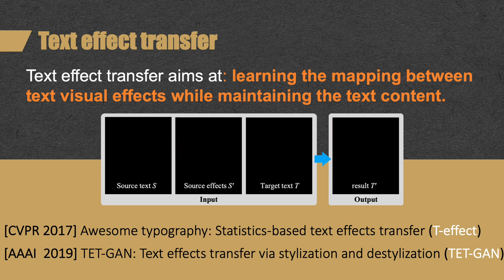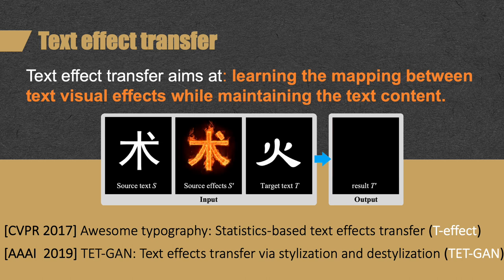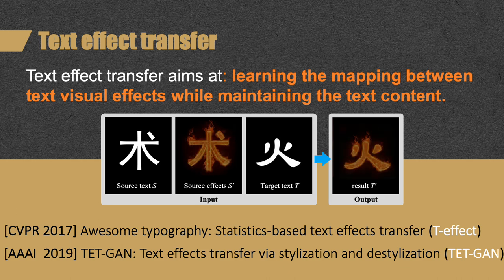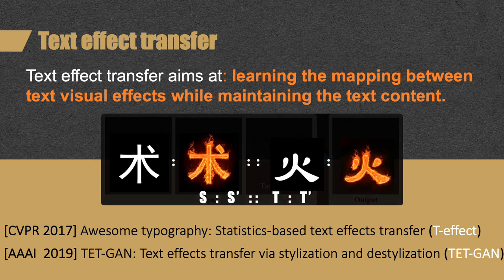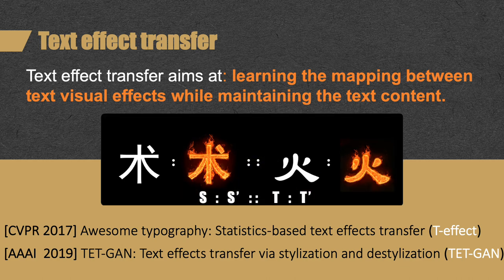In existing works, the inputs are source text S, source effect S', and target text T. The output is T', which has the same glyph as T while sharing the effect of S'. These four objects constitute an analogy. As an assistant editing tool, it can automatically transfer effects from one glyph to another, reducing the labor cost for designers.